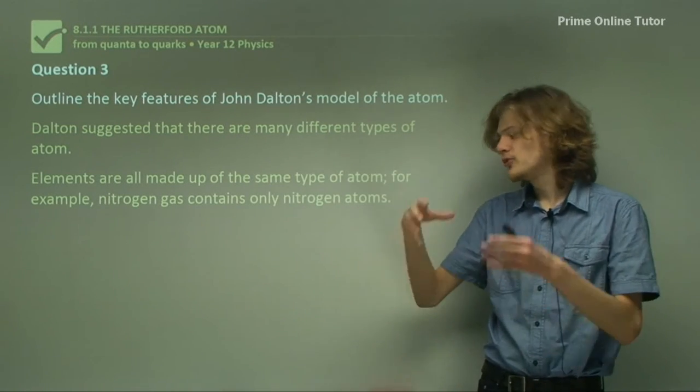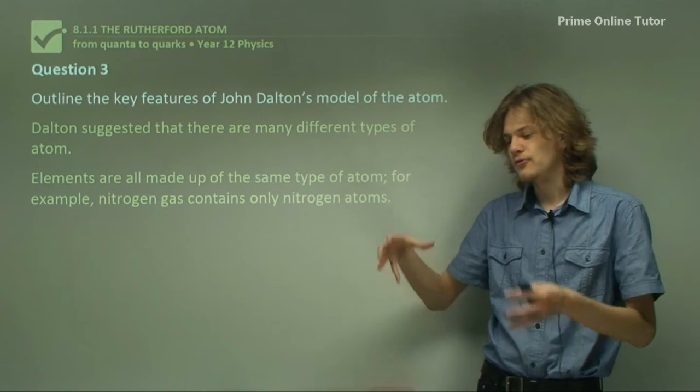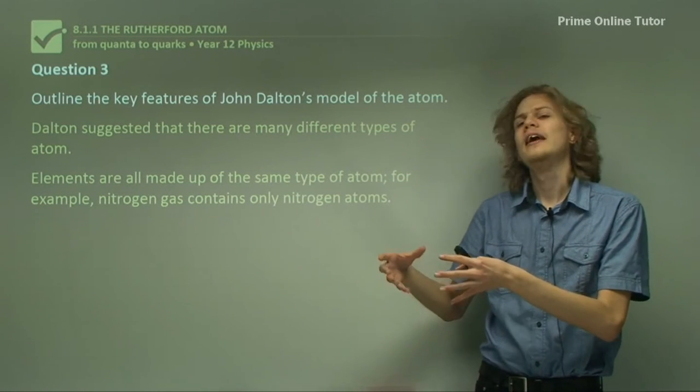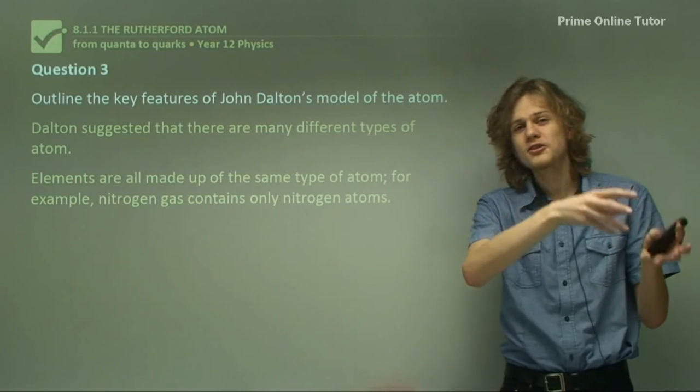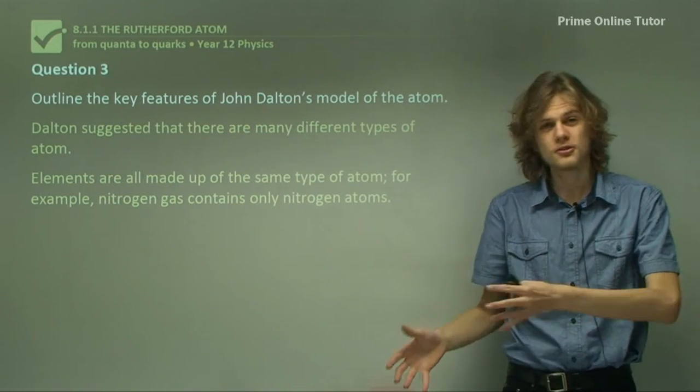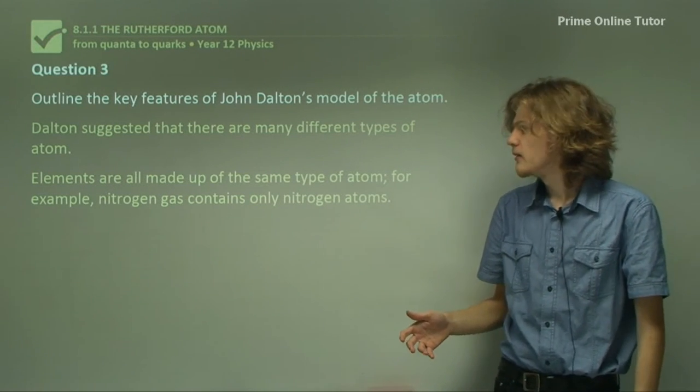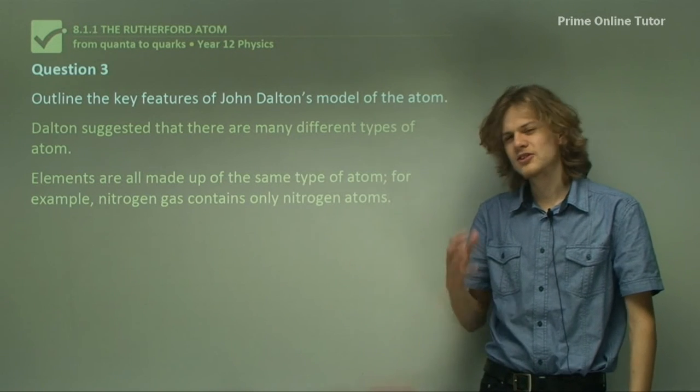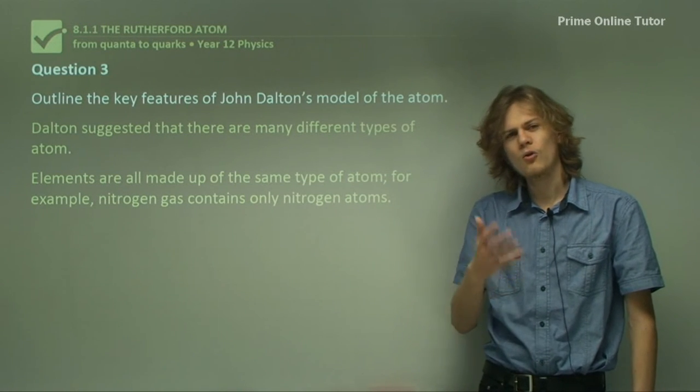So we can say that Dalton suggests that there are many different types of atom, and these atoms describe different gases. Elements are made up of all the same type of atom. So if you had nitrogen gas, it would be made up of lots and lots of nitrogen atoms, and not, for example, a mixture of nitrogen atoms and oxygen atoms.